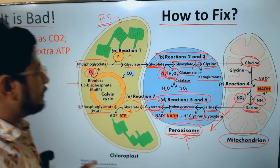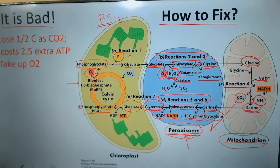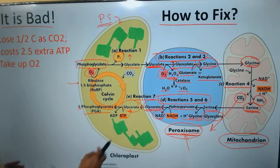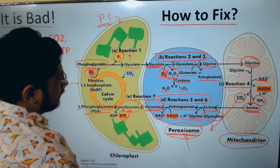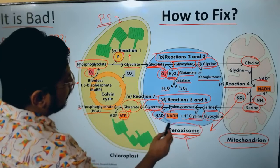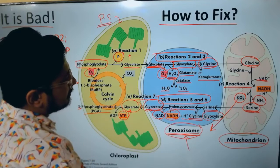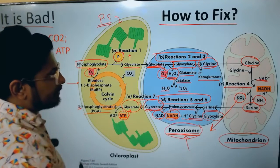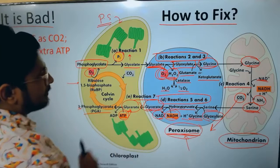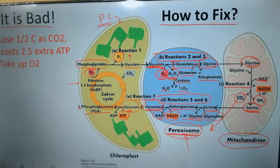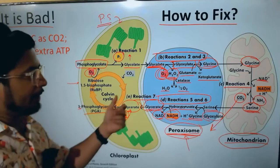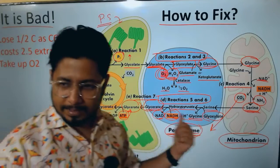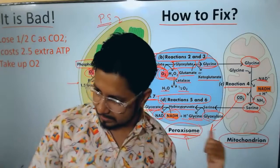In this entire process, there is involvement of ATP, NADH, and oxygen — a significant amount of energy is consumed. That is a bad thing, but this is still how the plant attempts to fix the problem of photorespiration.